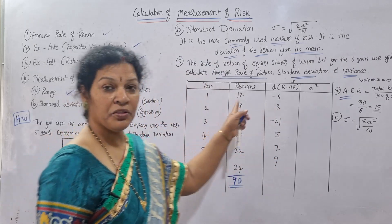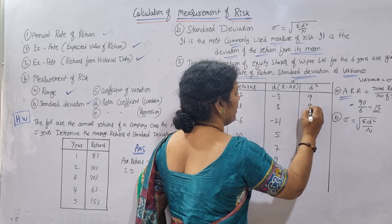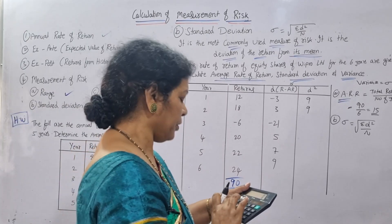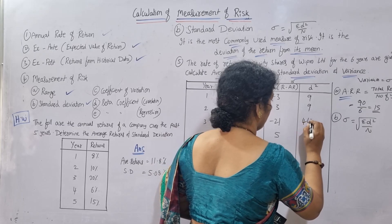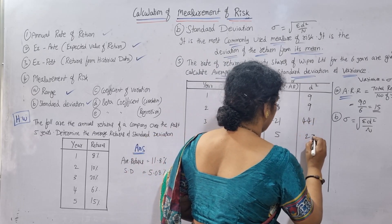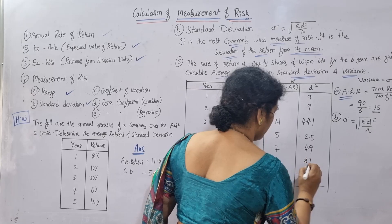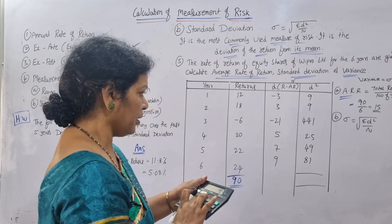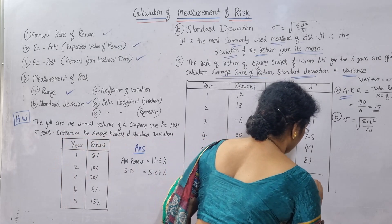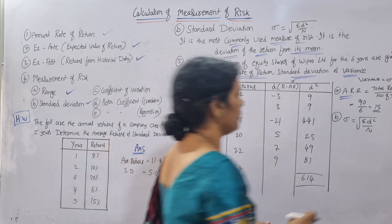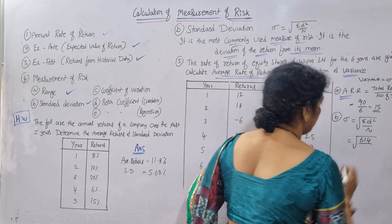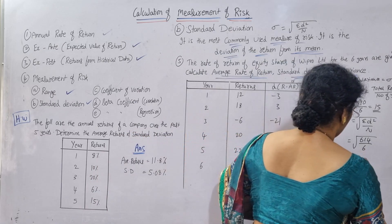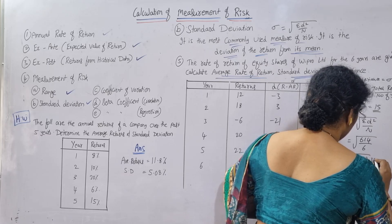Now we go for d-square. 3 squared is 9, 3 squared is 9, 21 squared is 441, 5 squared is 25, 7 squared is 49, 9 squared is 81. Total sigma d-square: 9 + 9 + 441 + 25 + 49 + 81 equals 614. Now apply the formula: root of 614 divided by n, where n is 6. That gives 102.33 inside the root.